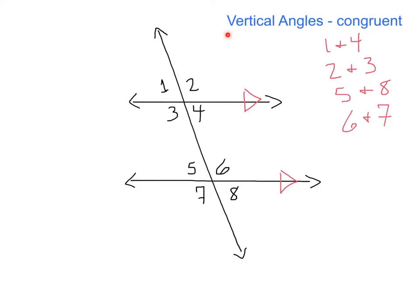We've got an oldie but a goodie: vertical angles. Vertical angles are just the angles directly across from one another, and we always know that vertical angles are congruent — they always have the same measure. So in this case, our vertical angles are 1 and 4. We've got vertical angles 2 and 3, vertical angles 5 and 8, and also vertical angles 6 and 7 — always directly across from one another.